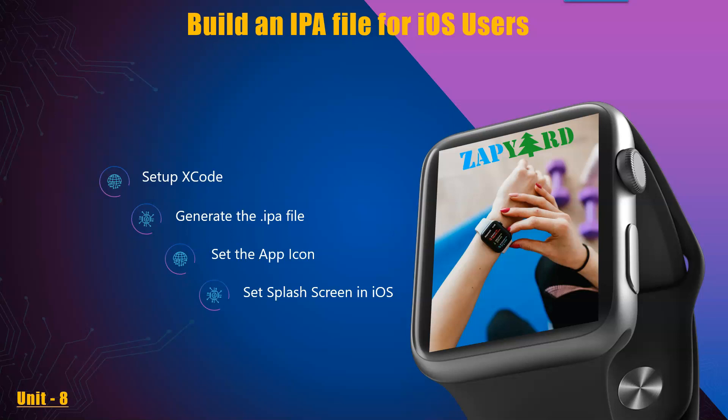We will learn how to set up Xcode, how to generate the IPA file, how to set the app icon and then set the splash screen for iOS. Till date you might have downloaded and installed Android and/or iOS apps, but by the end of Unit 8 you would have created your own apps for both Android and iOS devices.